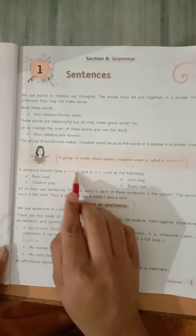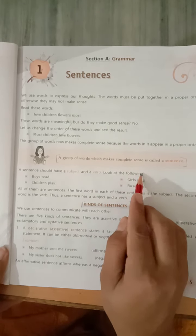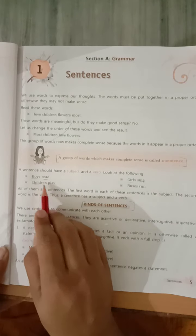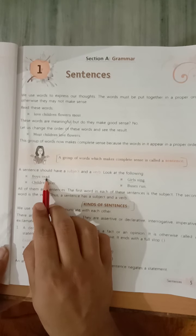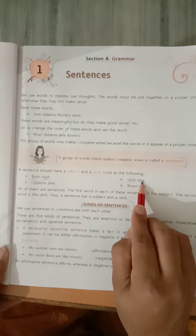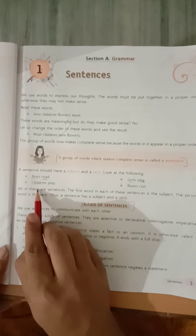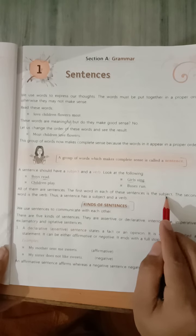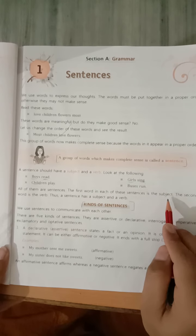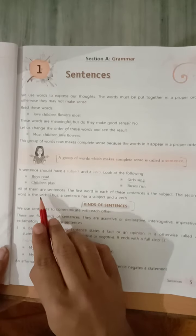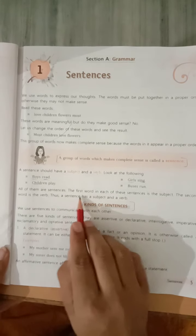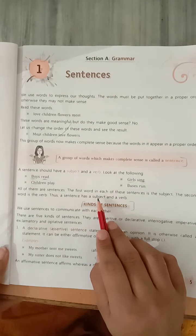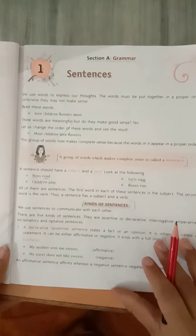A sentence should have a subject and a verb. Look at the following. Sabse pehle jo hai subject aur next kya hai? Verb hai. Okay, subject kya hai boy aur verb kya hai? Read. Subject girl, verb sing. And so on. All of these are sentences. The first word in each of these sentences is the subject. First word jo hota hai, woh subject hota hai. The second word is the verb. Woh second word jo hota hai, woh verb hota hai. Thus a sentence has a subject and a verb. Isi prakar, us sentence ke andar subject aur verb dono hote hain, okay?